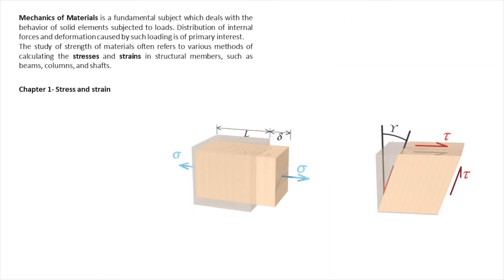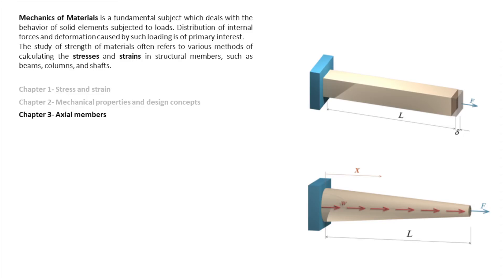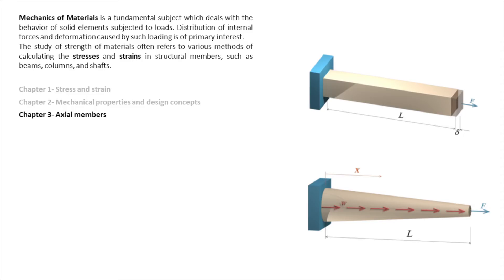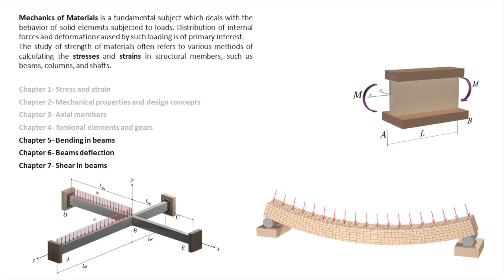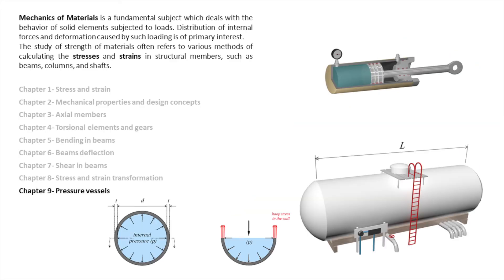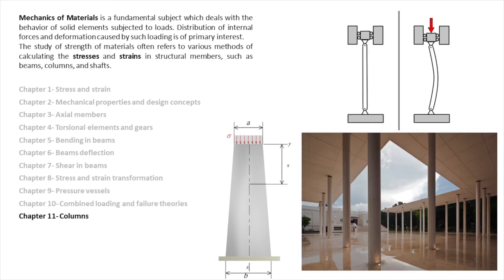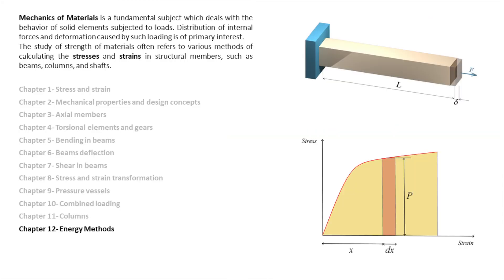Mechanics of materials starts with defining stress and strain as the main building blocks, then studying how to determine stresses and strains in various components such as axial members, torsional elements, beams, shafts, pipes, and pressure vessels. In addition, other topics such as stress and strain transformations, gears in power transmission systems, buckling of columns, failure theories, structural connections, and energy methods are topics of discussion in mechanics of materials.